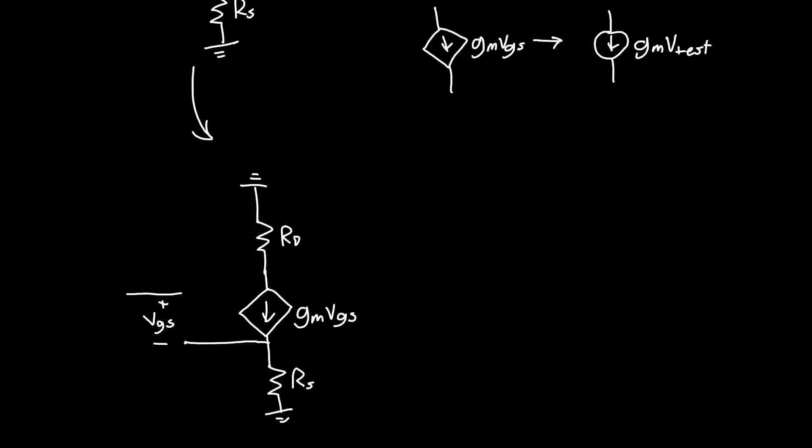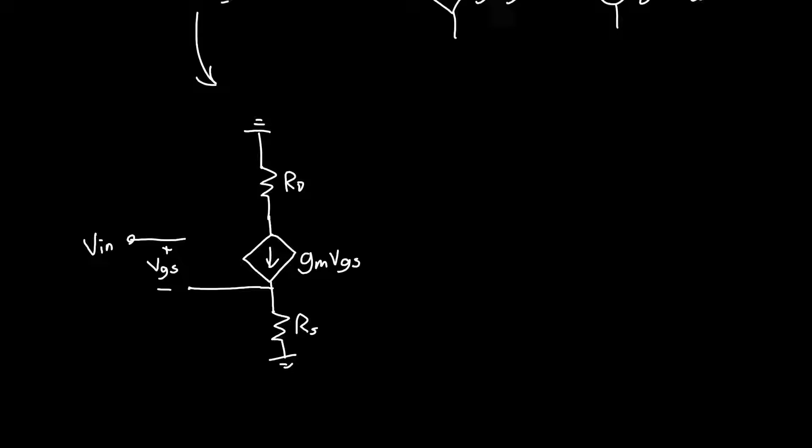How do we calculate the return ratio for this circuit? First we have to replace this dependent source with an independent one of value GM V test. We've got an independent source now of value GM V test, and we need to ground the input. That's because the input doesn't matter for the feedback loop.